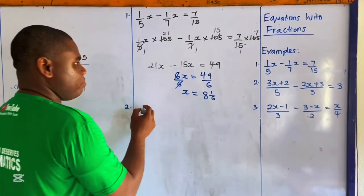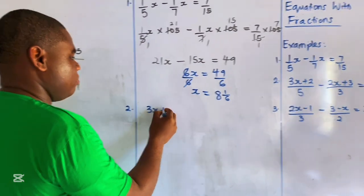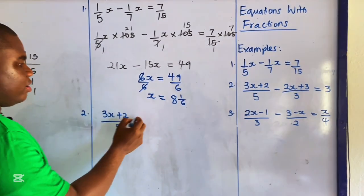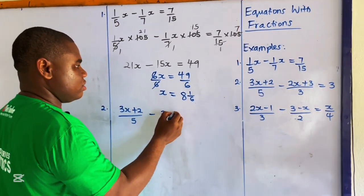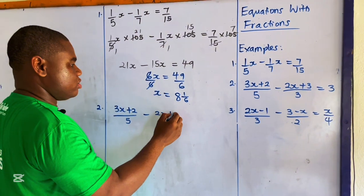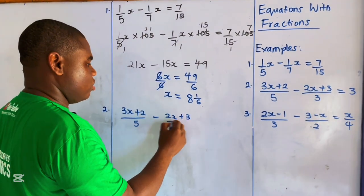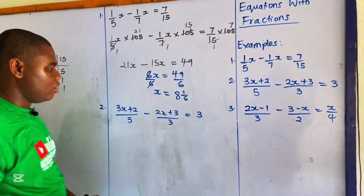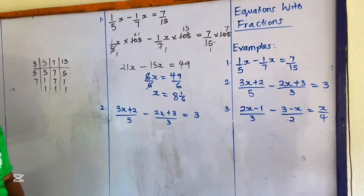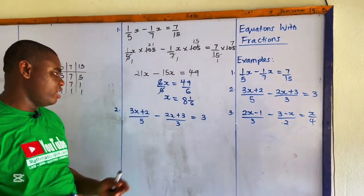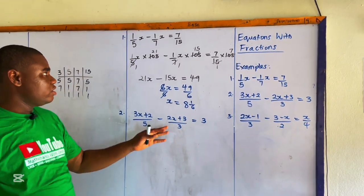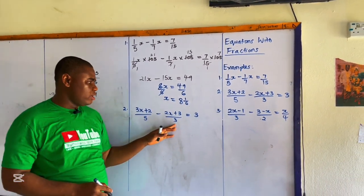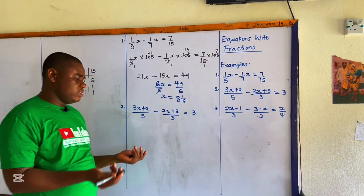For question two, we have: 3x plus 2 over 5, minus 2x plus 3 over 3, equals 3. We are going to multiply all three terms by the LCM of the denominators, just like we did in question one. Since 5 and 3 are both prime numbers, the LCM is simply 5 times 3, which equals 15.